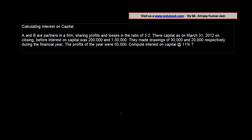Calculating interest on capital. Let's see another problem. A and B are partners in a firm sharing profits and losses in the ratio of 3 is to 2. So we have A, we have B, the profit sharing ratio is 3 is to 2. Their capital as on March 31, 2012 on closing before interest on capital was 200,000 and 150,000. So the closing capital is 200,000 and 150,000 closing capital.